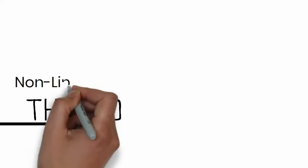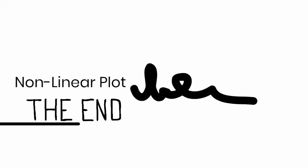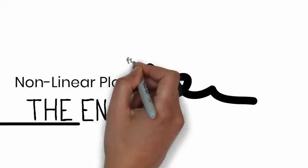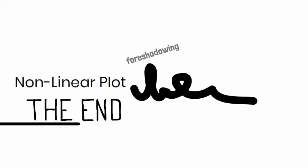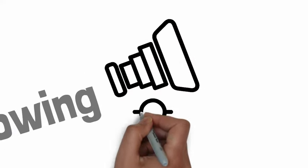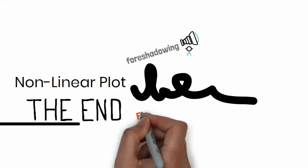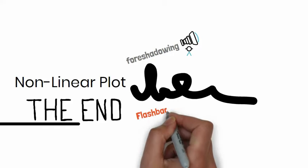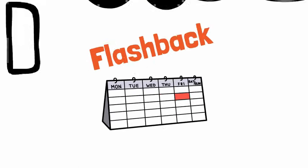Other plots are non-linear. They include certain elements like foreshadowing, which provides important hints about future events in the story. Flashback involves a brief interruption in the plot that describes an earlier event.